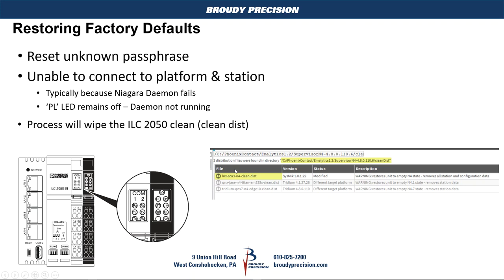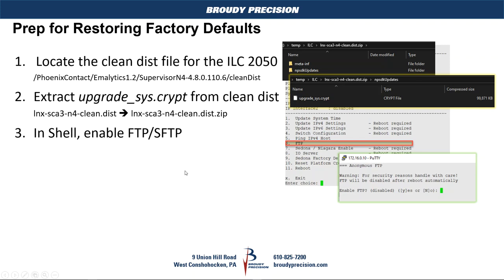The file that gets used is the Linux distribution file for the ILC 2050 — referred to here as SCA3. In preparation for doing the factory restore, you need to locate that clean disk file, copy it to an accessible location, and rename it to a .zip file. Then, from the npsdk updates folder, copy out the upgrade sys .crypt file. Put that in an easily accessible location so that when you go in with FileZilla you can grab it and copy it to the ILC 2050.